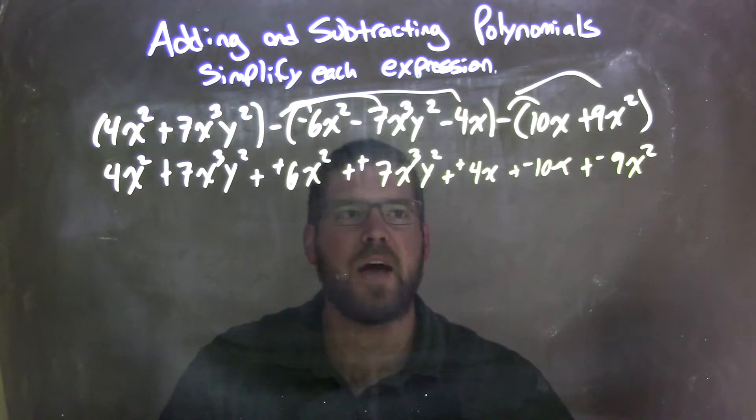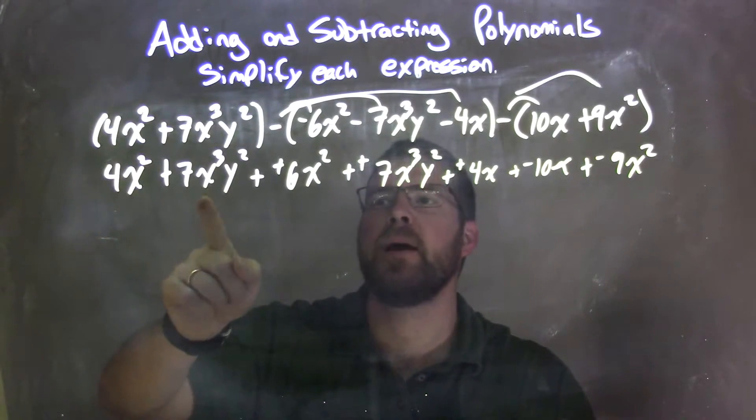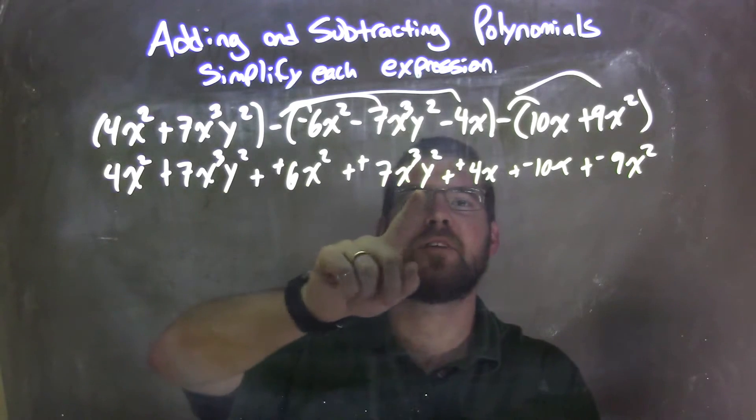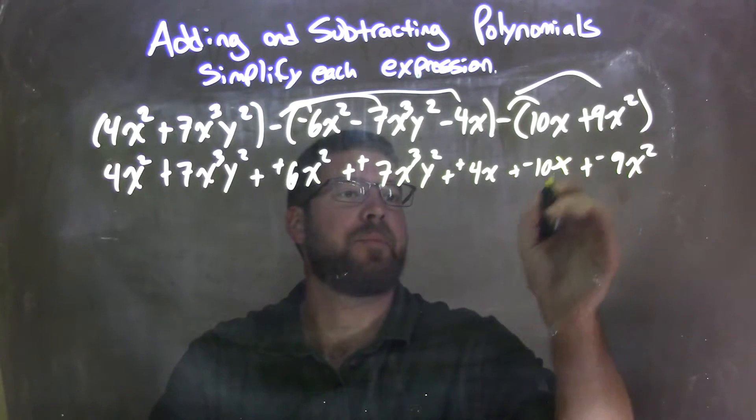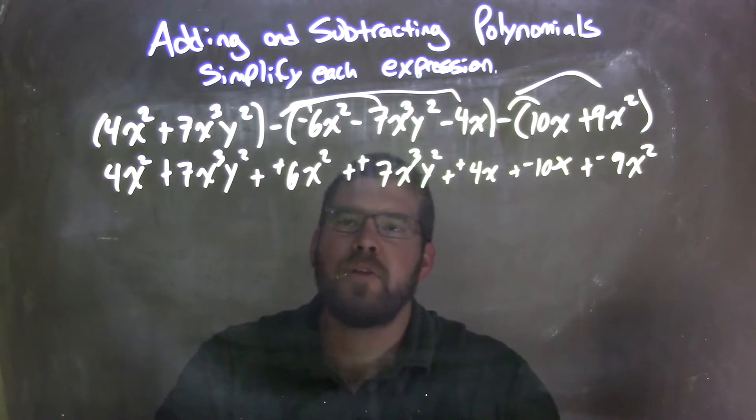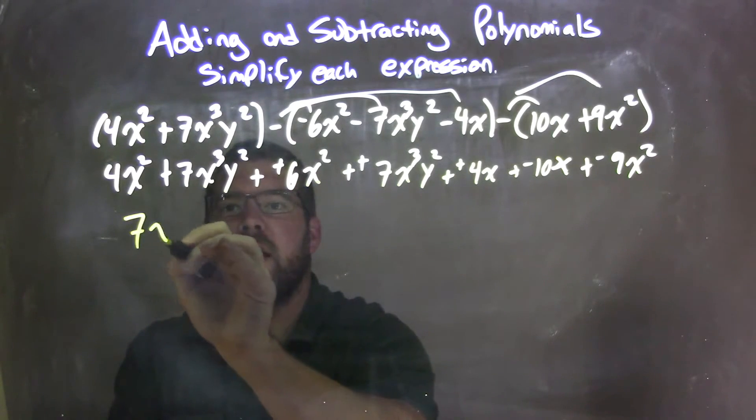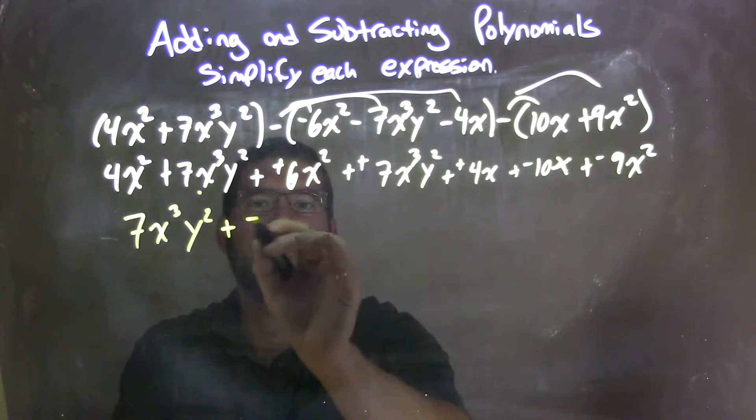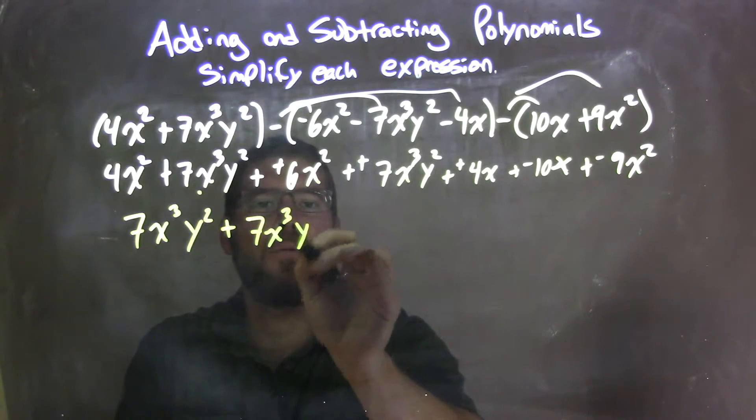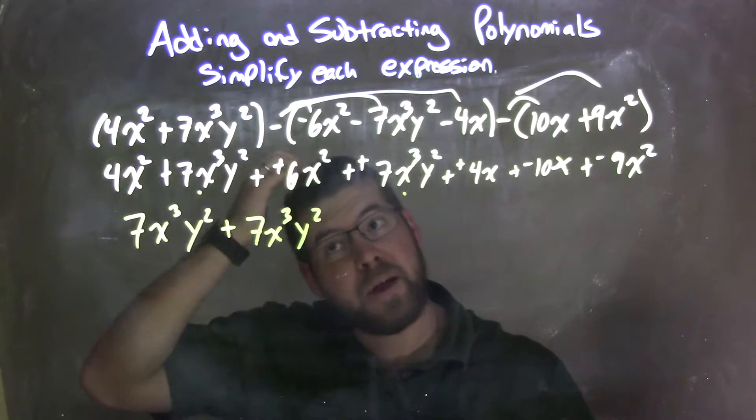Now let's put our like terms together. I'm scanning ahead. I see x to the third y squared, x to the third y squared. The rest of them just have different degrees of x's in them. What I'm going to do is I'm going to put the 7x to the third y squareds first. So we have 7x to the third y squared, that's one of them. I brought the dot down for the dot there, so I brought it down. Plus this one here, 7x to the third times y squared. These are like terms, the same type of variables multiplied there.